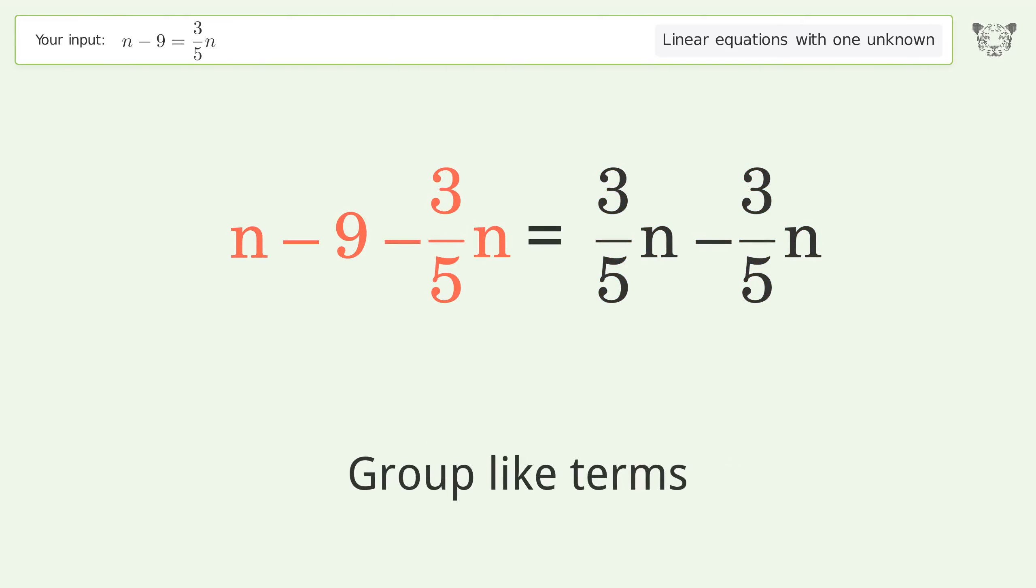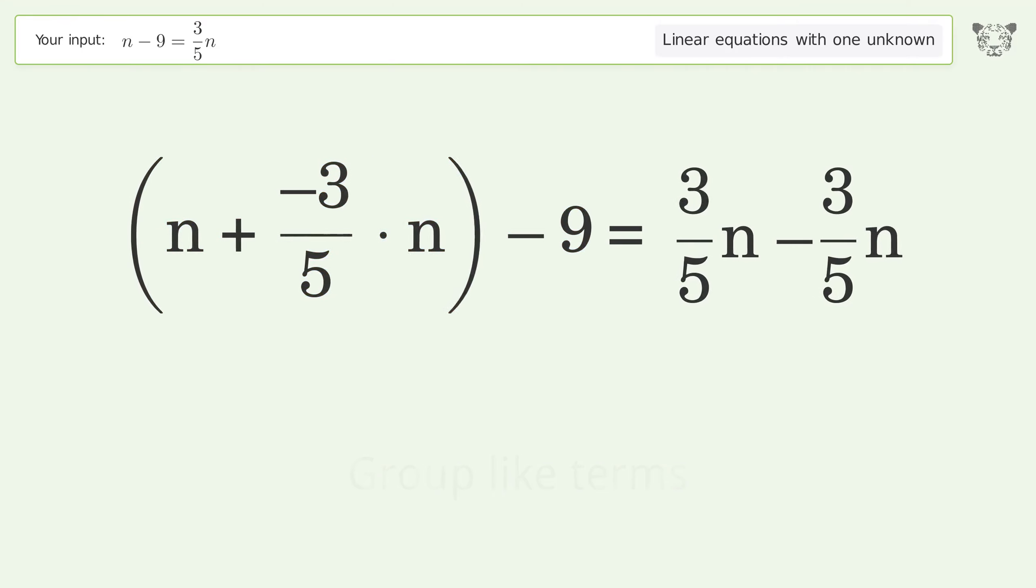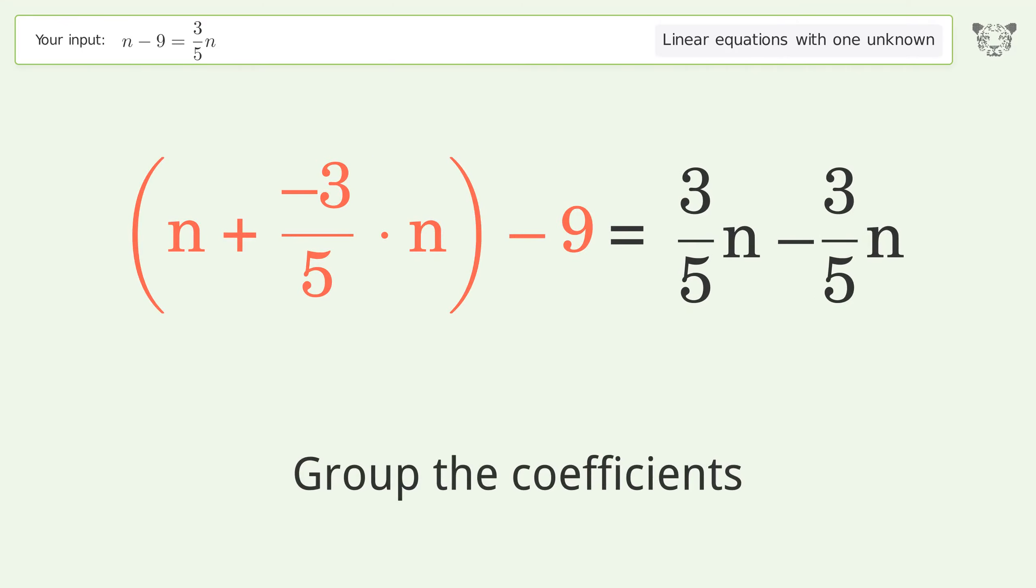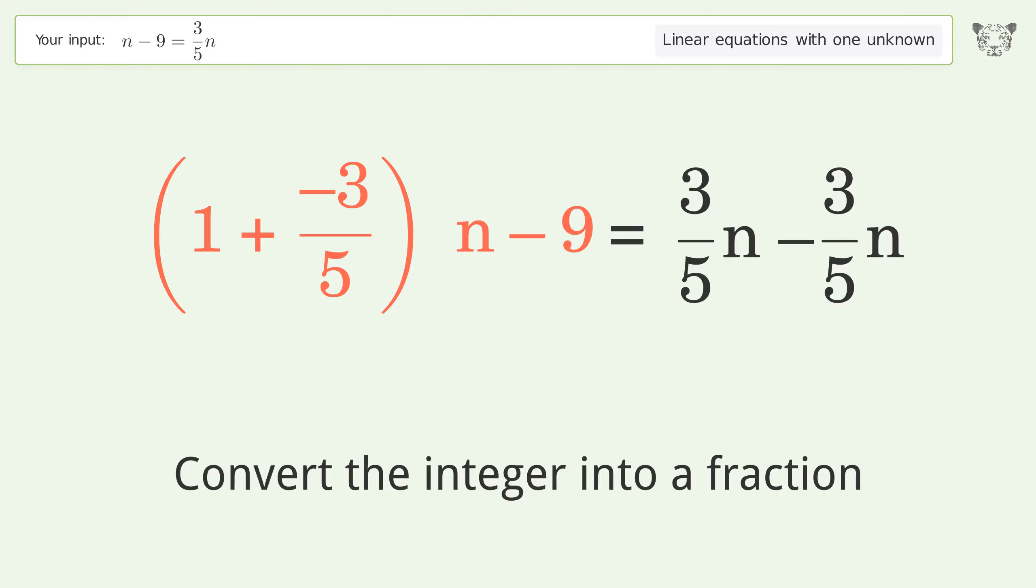Subtract 3 over 5 n from both sides. Group like terms. Group the coefficients.